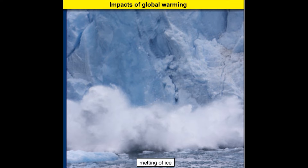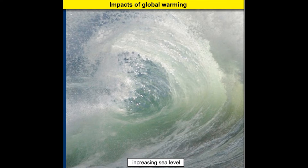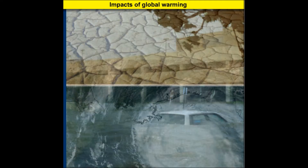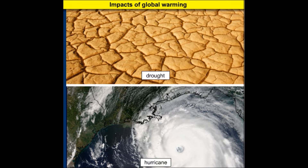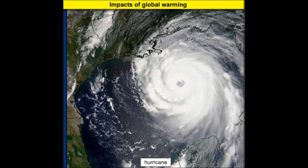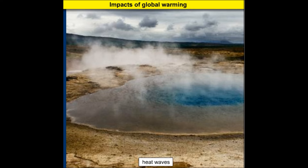The melting of the Arctic and Antarctic ice caps is due to an increase in global temperature. This causes sea levels to increase, resulting in the flooding of lowland areas. Temperature changes also bring about climate changes that might cause natural disasters like droughts, tornadoes, and heat waves, all due to global warming.